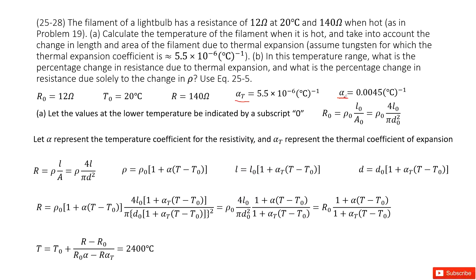We can write the initial resistance R0 equal to rho0 times L0 divided by A0. Considering the diameter, we replace A0 as pi times D0 squared over 4, and it can be written in this way. This is the initial resistance.